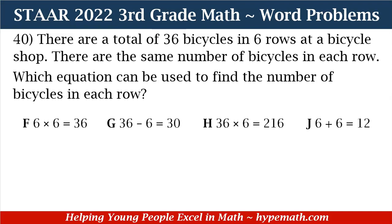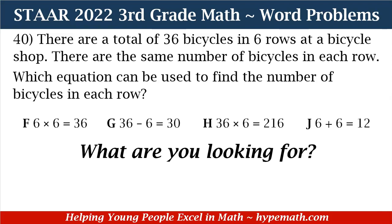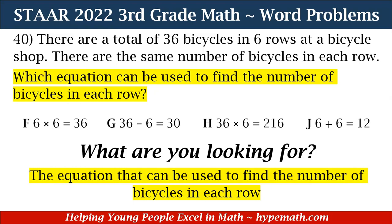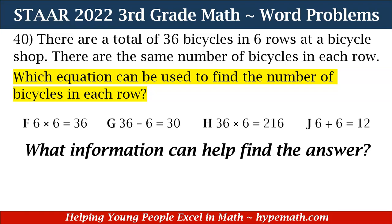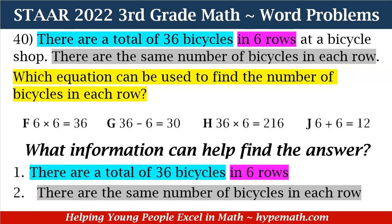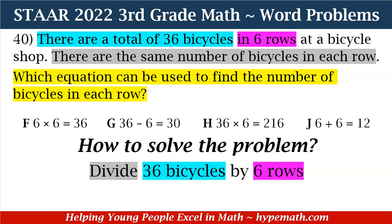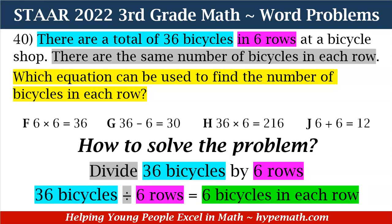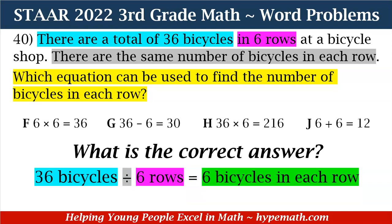In order to solve this problem, the first thing we need to do is ask what are we looking for. We are looking for the equation that can be used to find the number of bicycles in each row. The information that can help us is that there are a total of 36 bicycles in six rows, and there are the same number of bicycles in each row. We need to divide 36 bicycles by six rows. 36 divided by six is equal to six. There are six bicycles in each row.